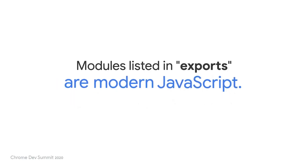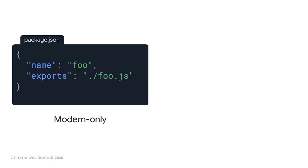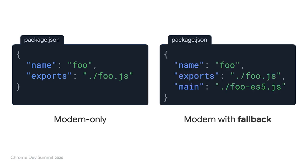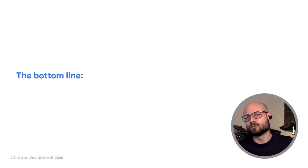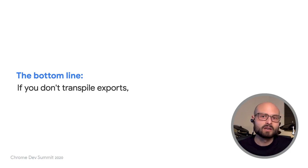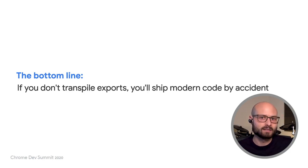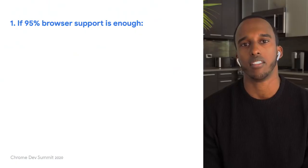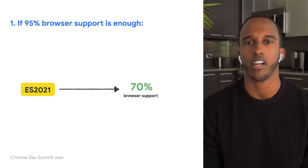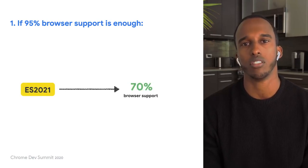Going forward, there are at least two types of NPM packages I expect to see: modern-only, where there's just an exports field implying an ES2019 package; and packages with both exports and main fields, where main provides an ES5 and CommonJS fallback for older environments. The bottom line is that soon, if you don't transpile package exports, there's a high likelihood that you'll ship modern code by accident. And maybe shipping modern code is okay — the key is that you define a version of modern that strikes the right balance between JS features and browser support.